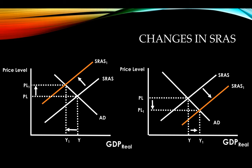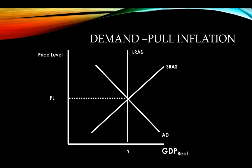By now you know what is happening to unemployment in each case. Those are the four things that can happen with our graph. Later we'll add the long-run aggregate supply curve, but for now those are the four main scenarios. Next let's look at something called demand-pull inflation.